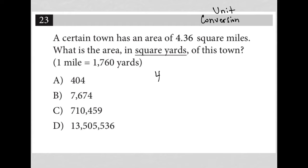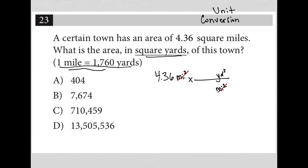So I'm going to take the information provided, 4.36. I'm going to write square miles as miles squared — that might actually be pretty helpful for you to do as well. And I know that I want to convert this into square yards. So I need to figure out how do I get miles squared on the bottom and yards squared on the top, so that my units that I no longer want — the miles squared — can cancel out. Because this is a conversion between miles squared and yards squared, not simply miles and yards.